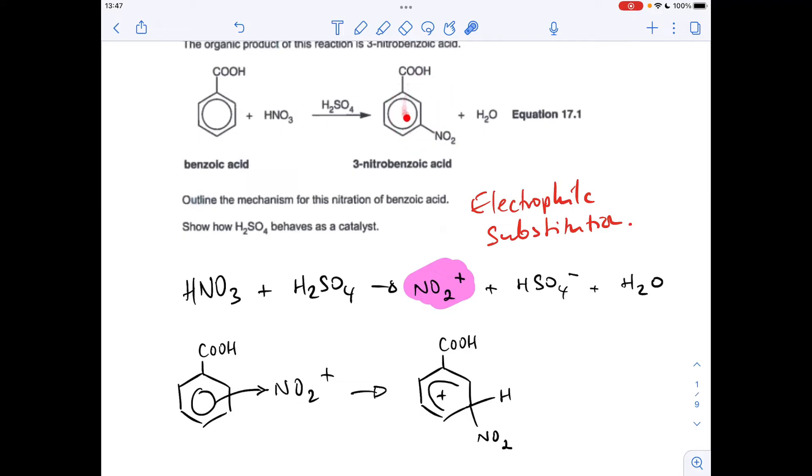The final product there, the three nitrobenzoic acid, is telling us that the substitution is going to take place at that carbon there. So we put the NO2 group on, but we also show the hydrogen that was already bonded there. We didn't bother showing it before, but we're going to show it now because it's involved in the next part of the mechanism.